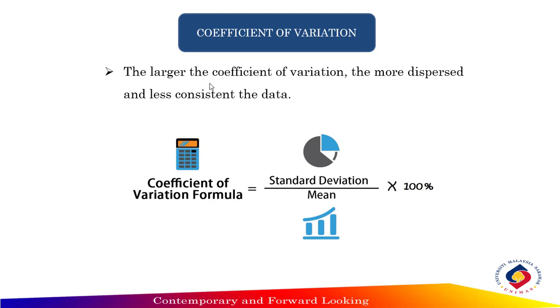The smaller the coefficient of variation, the more consistent the data. So the formula to find coefficient of variation is equal to standard deviation divided by mean times 100%.